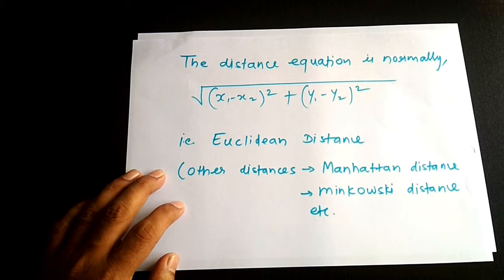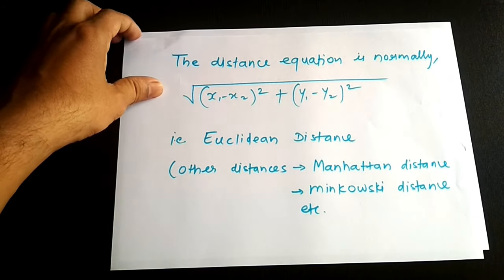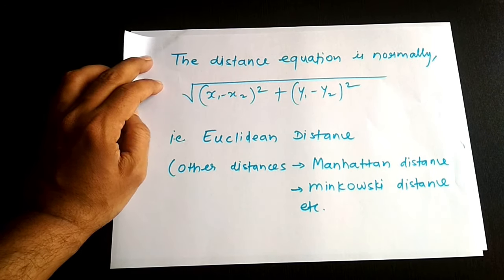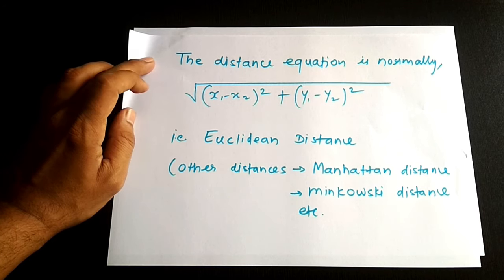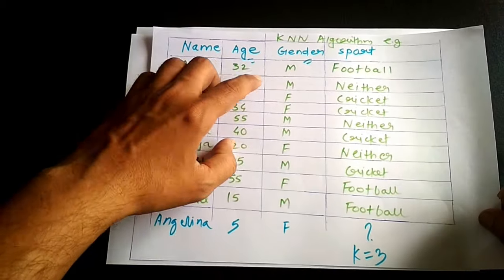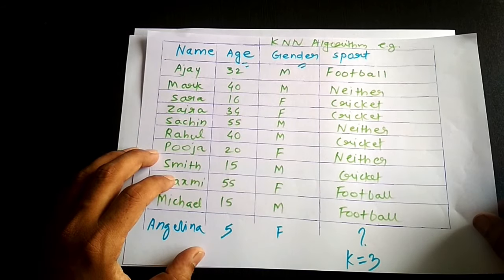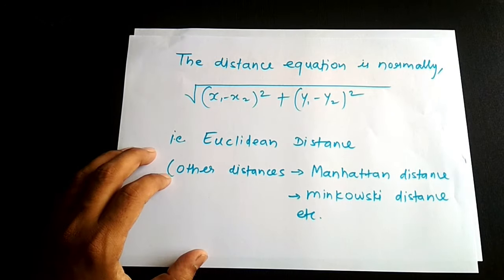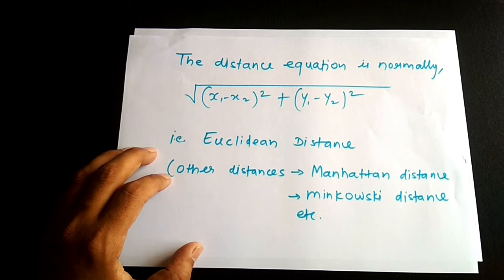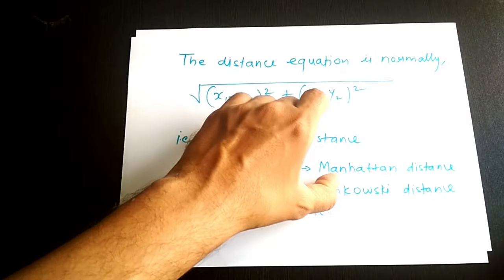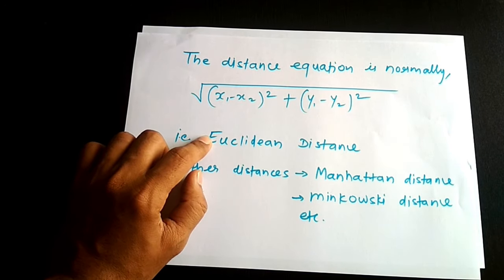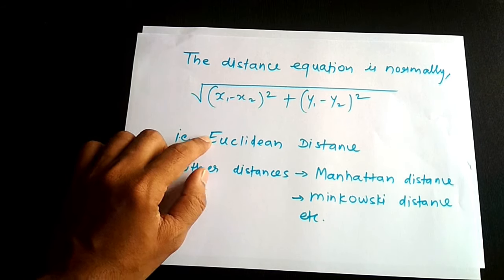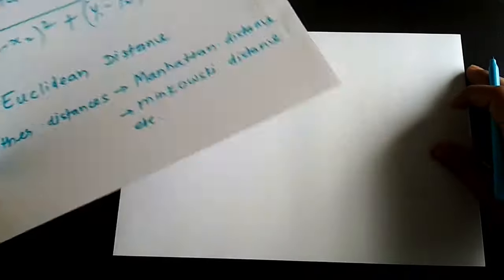In our case, we have two pieces of data — age and gender — so we take the differences of those, square them, and add them together under a square root. If there were more features, we would simply keep adding those squared differences continuously. We will use Euclidean distance in this example.